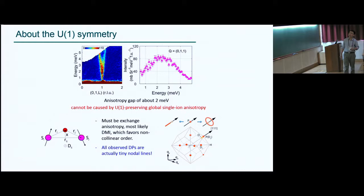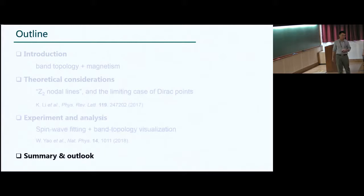And so that would generally tell us that the moments should be slightly canted away from each other and not exactly collinear. And despite the fact that we are not able to resolve these tiny loops, we believe that actually all the Dirac points we are seeing are actually nodal lines.